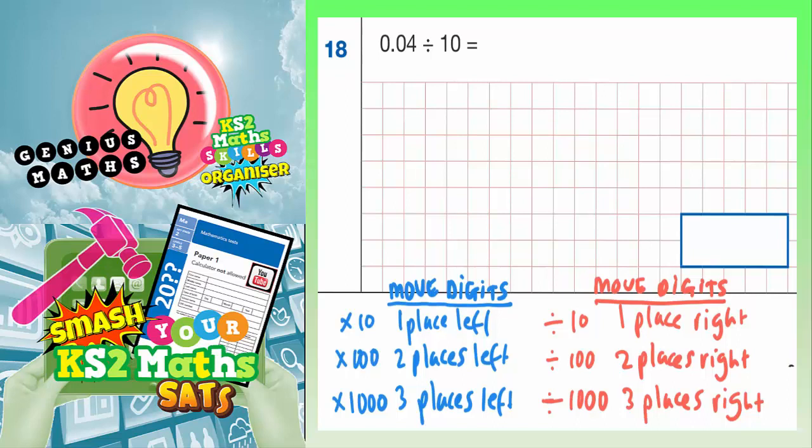So if you're multiplying by 10, 100 or 1,000, you move all the digits to the left, and that will actually make the number bigger. And how many places you move to the left depends on how many zeros it's got. So one place to the left is when you times by 10, 1-0. Two places to the left is times 100, 2-0. Three places to the left is times 1,000, 3-0.